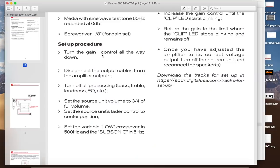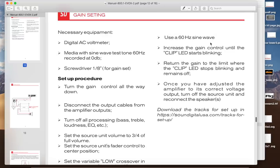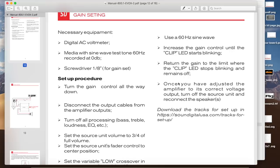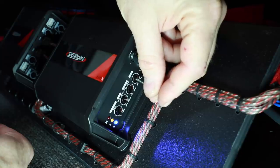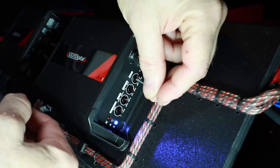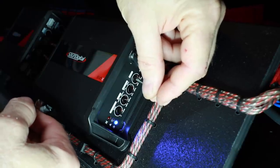The 800.1, it has a clip light indicator. The startup process is basically the same. Make sure everything is turned off, just like on the other one. Use a 60 hertz sine wave. Increase the gain control until the clip LED starts blinking. Return the gain to the limit where the clip LED stopped blinking and remains off. And that's basically it. Let's head back into the car. Start slowly turning up your gain until you see that orange light right there come on. Turn it down. And that would be set.